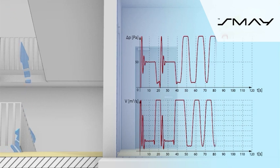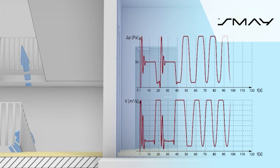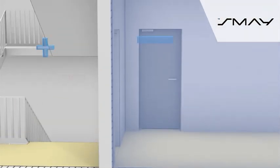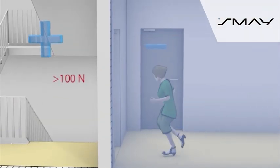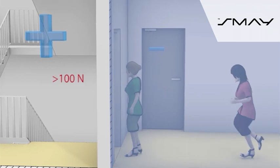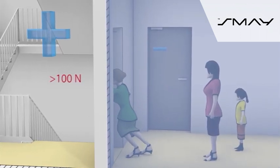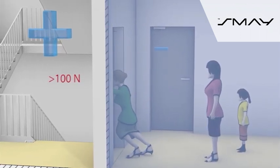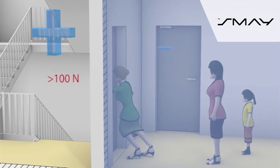For example, the oscillatory increase of pressure to 150 pascals will increase the required door opening force to 200 newtons, which will hinder its opening. The power necessary to open the door drops below the required level of 100 newtons, which may last from 10 to 20 seconds.